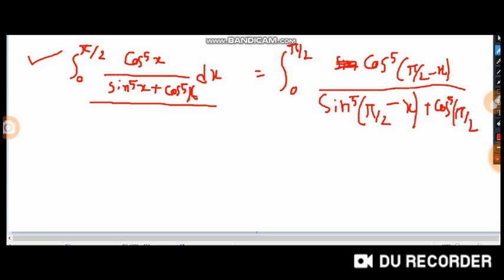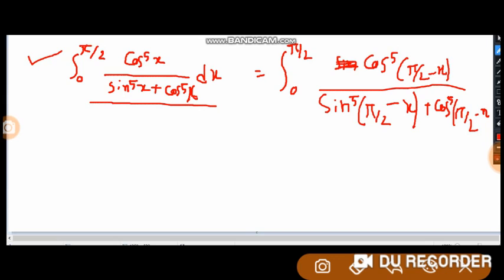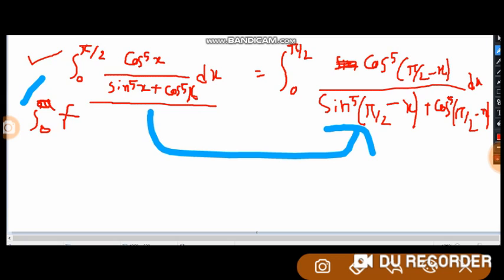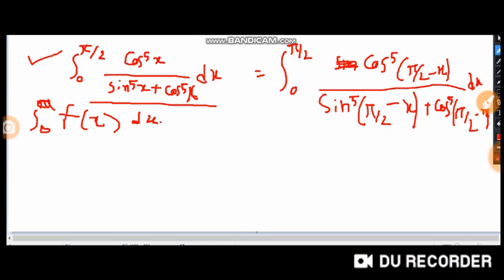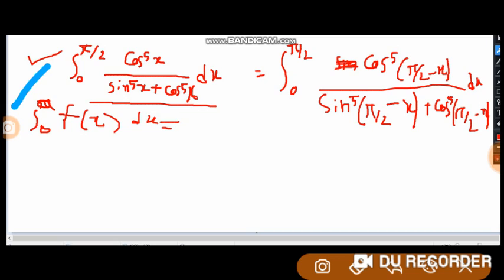Look at this. Here x has been replaced with π/2 minus x. All x has been replaced from x to π/2 minus x. Here we have used a property of definite integral. The property is: integral 0 to a, f(x) dx equals 0 to a, f(a minus x) dx.